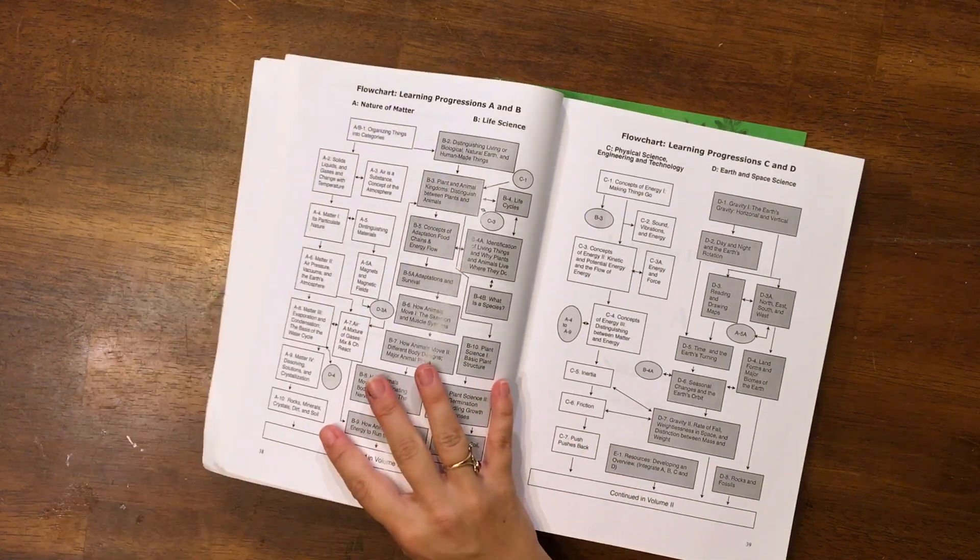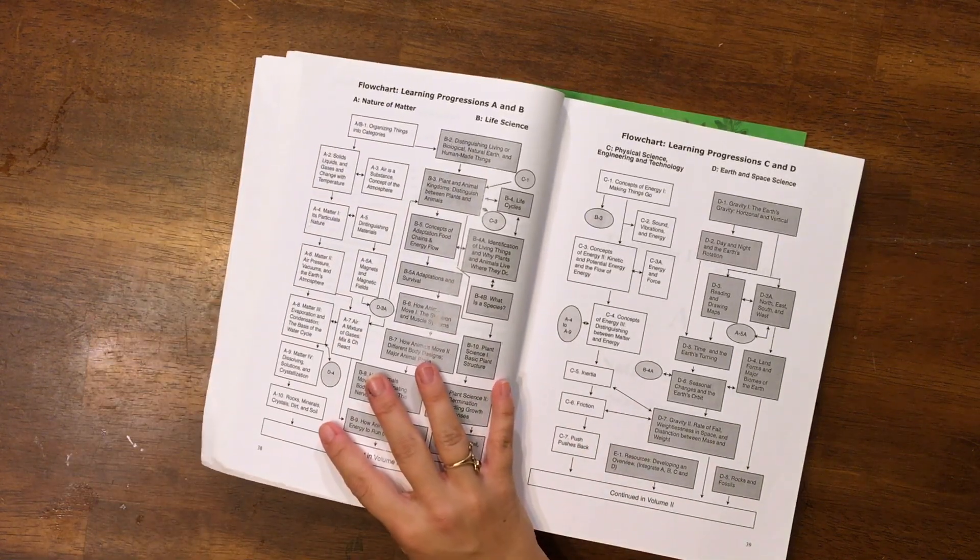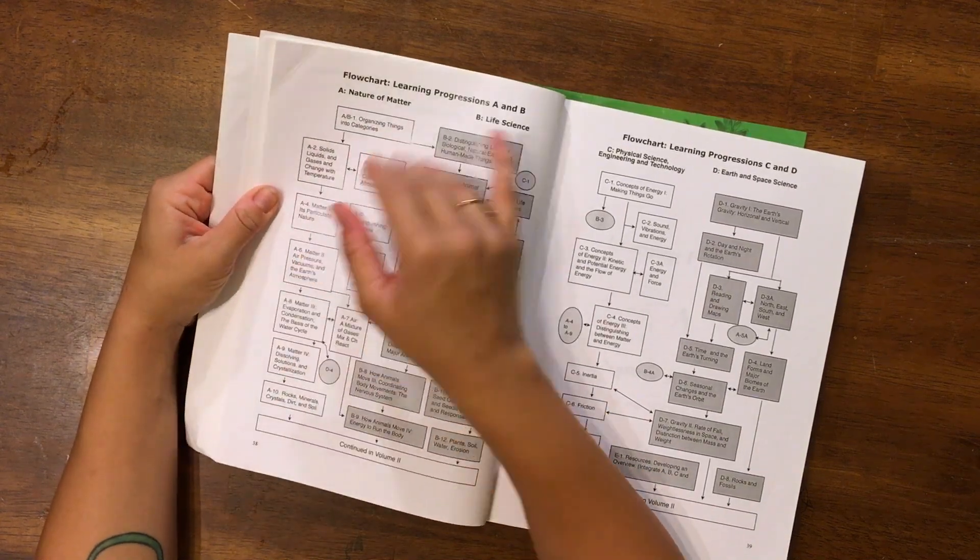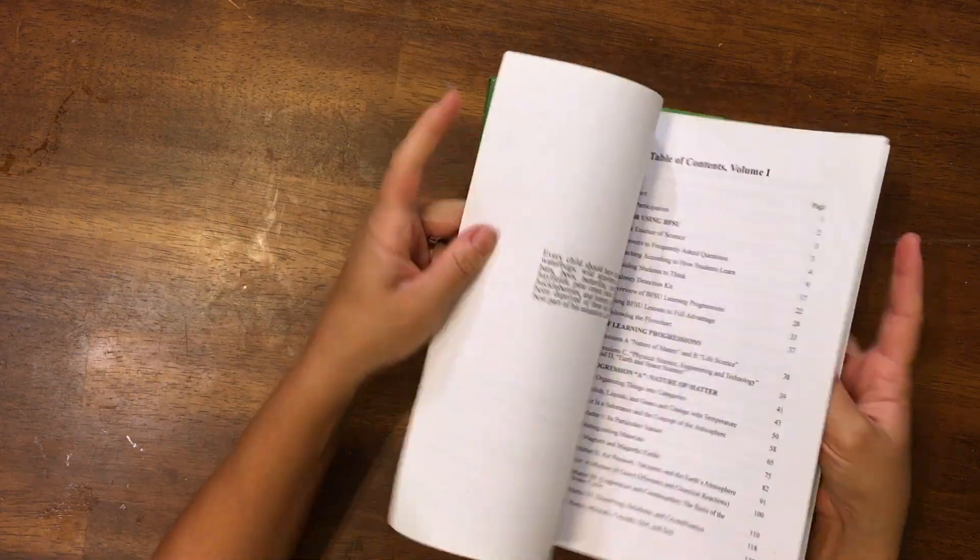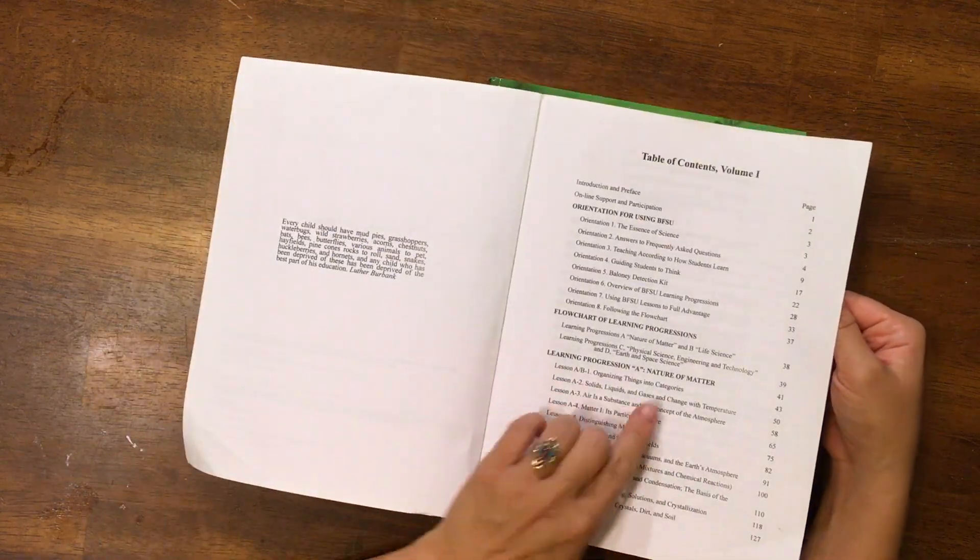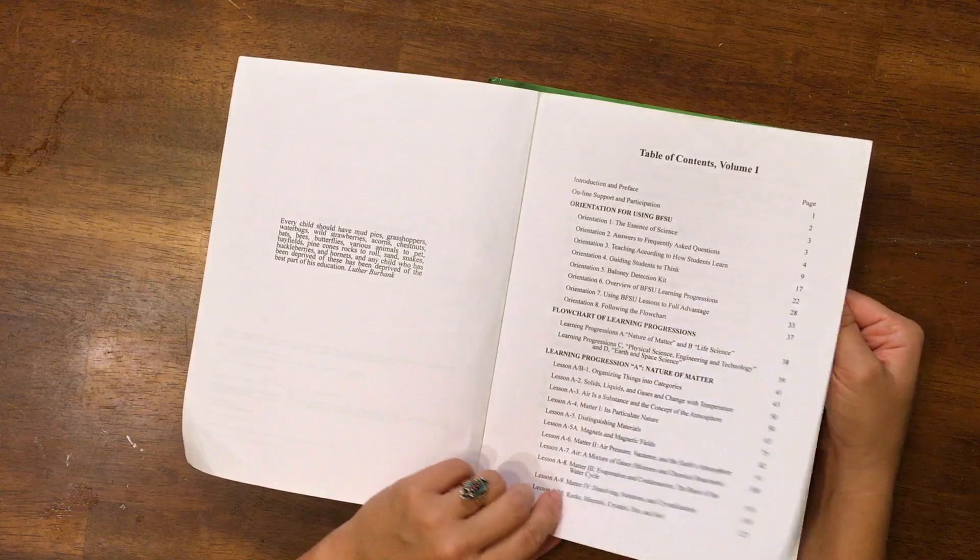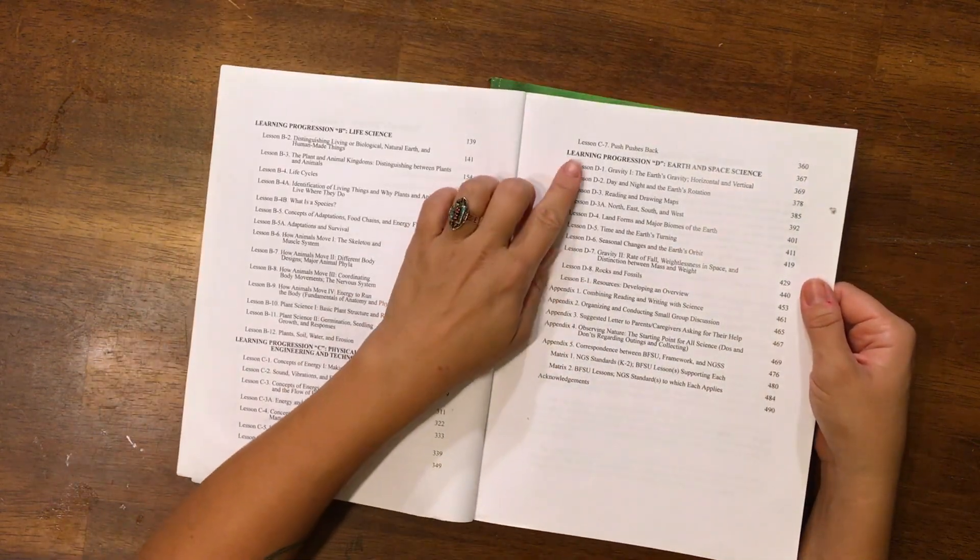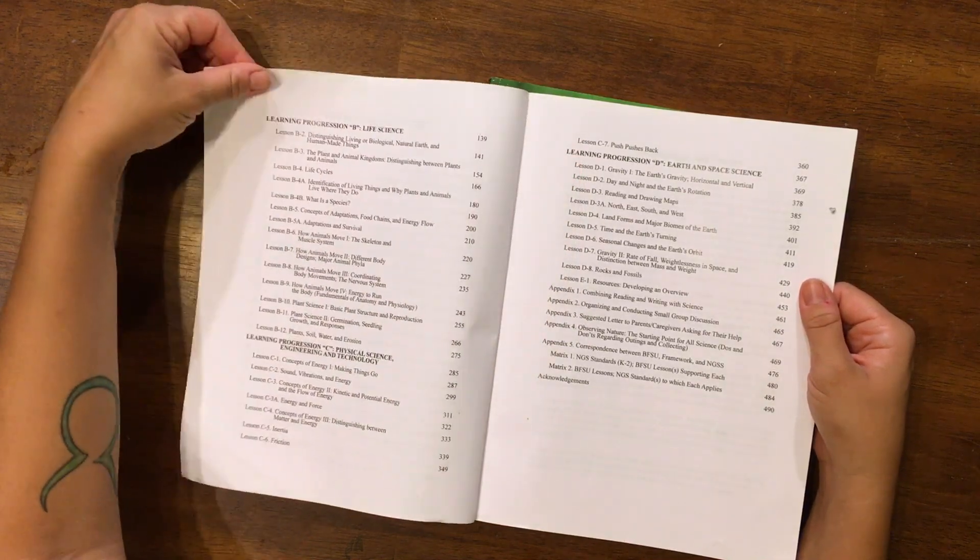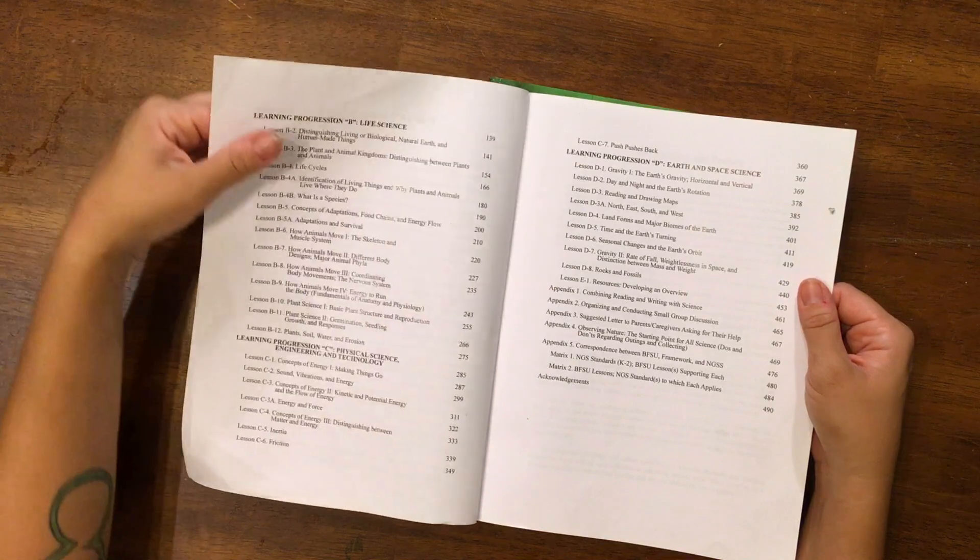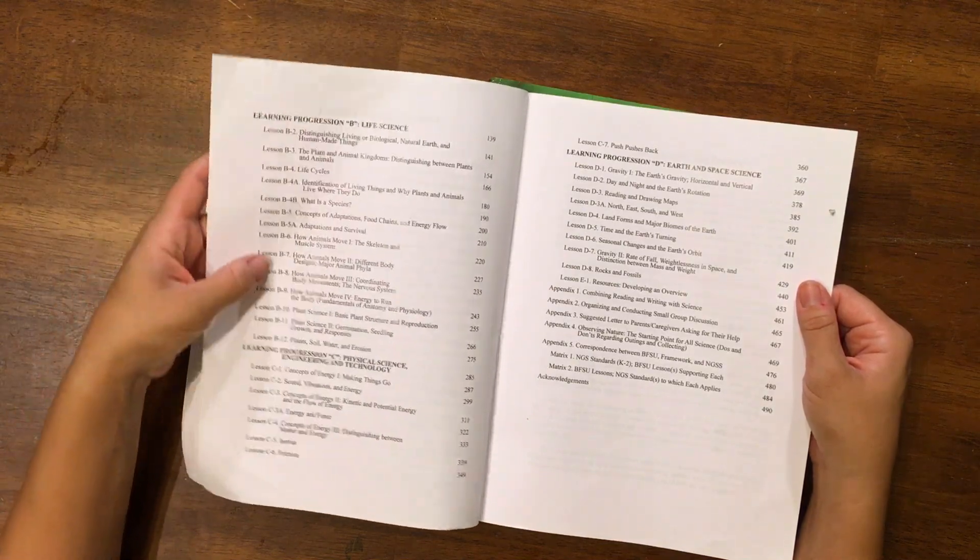So you want to start here, organizing things into categories. Let me take a step back. There are different categories of science, so you've got nature of matter, life science, physical science, earth science, and they are all bunched up by category.